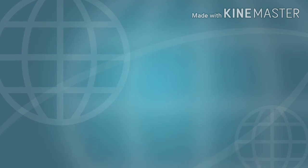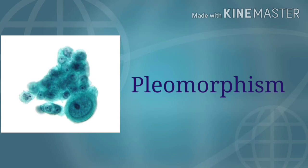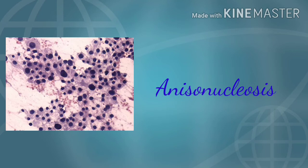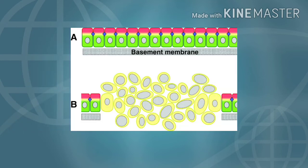Now let's talk about the morphological features of anaplasia. The morphological features are: pleomorphism, which is variation in size and shape of the cells; next feature is anisonucleosis, which is variation in size of the nucleus.